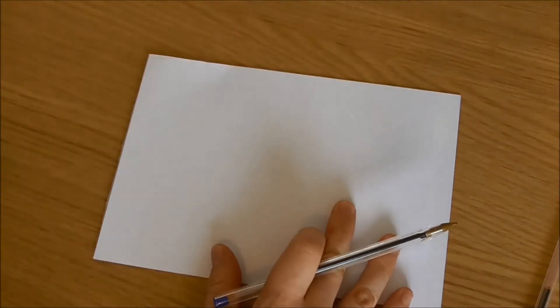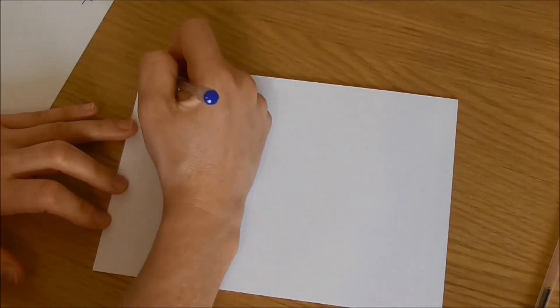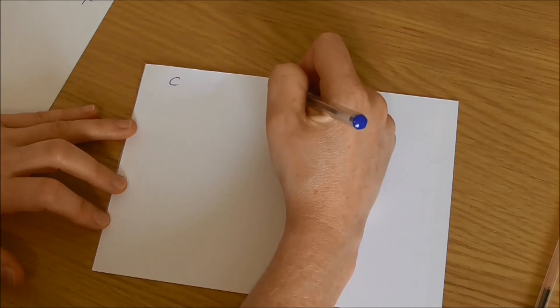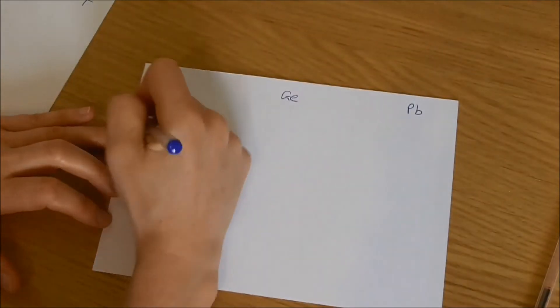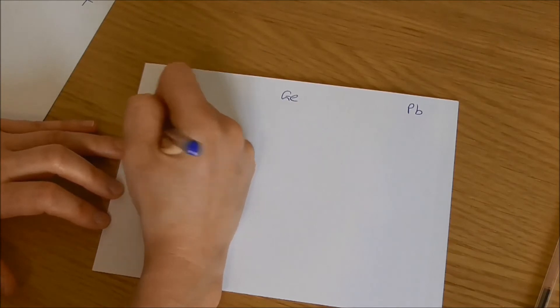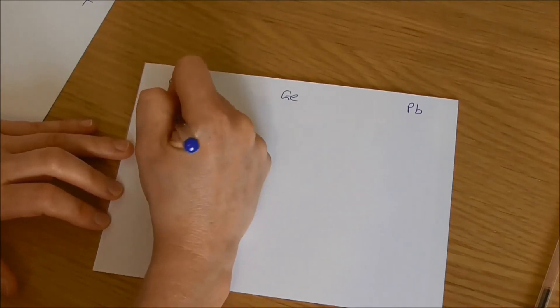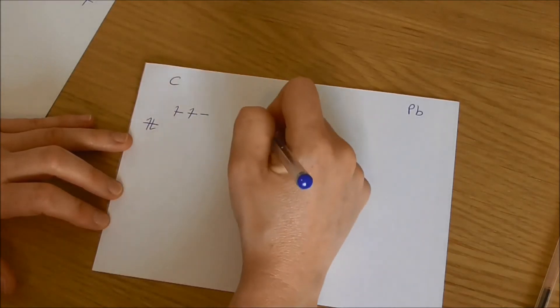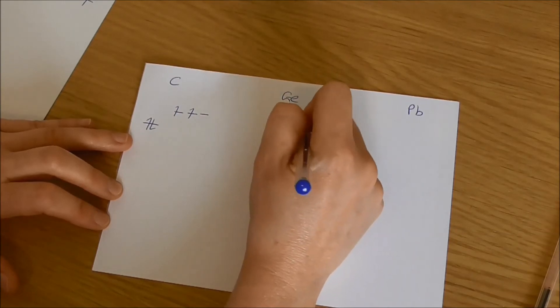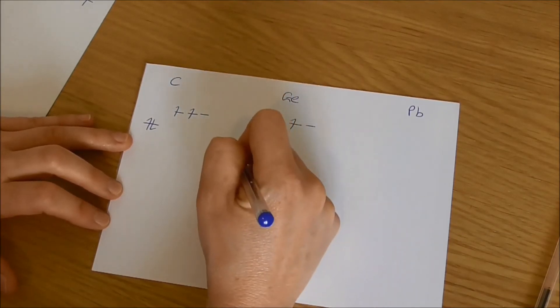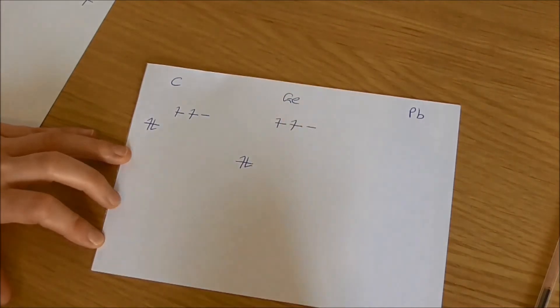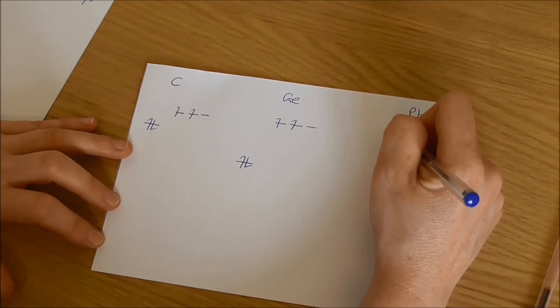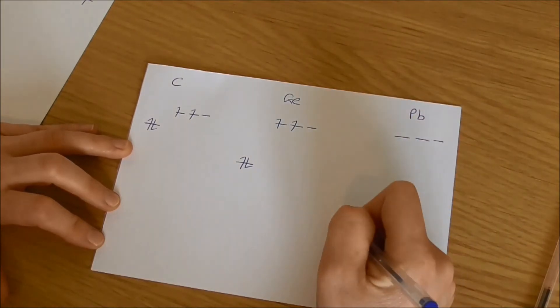Now what happens if we go down that group in the p-block? We have carbon here for example, then let's consider germanium and then lead at the end. For carbon we've got our s and our p orbitals. Germanium, again we've got s and p orbitals and the same number of electrons in each, but the energy gap between those orbitals is bigger.